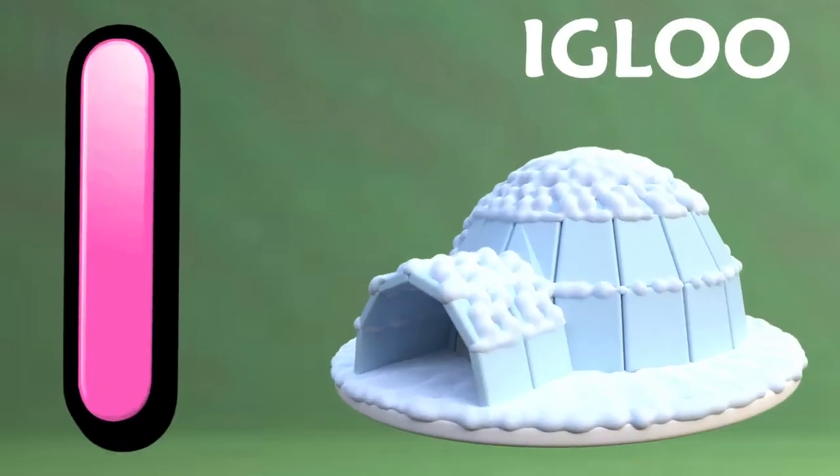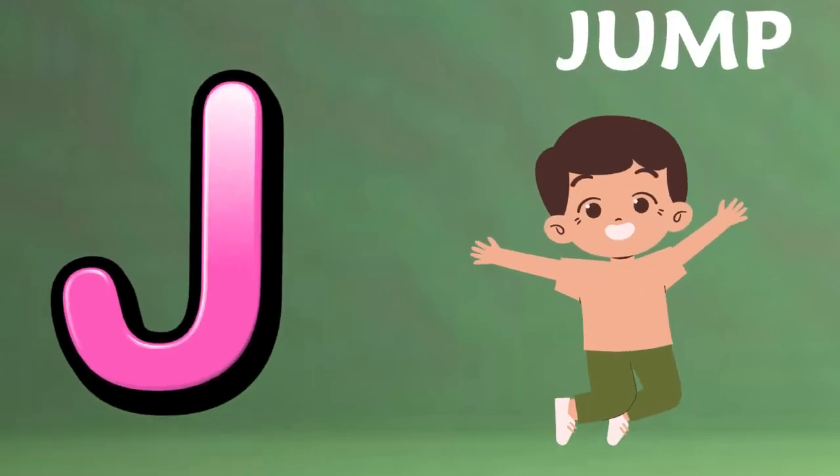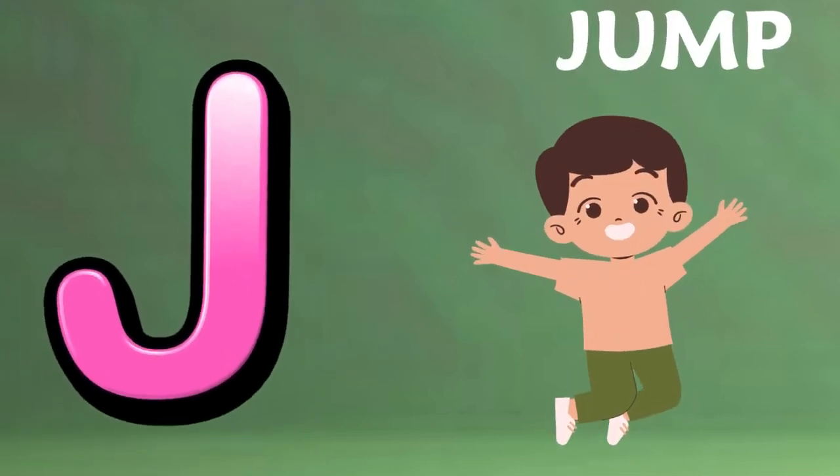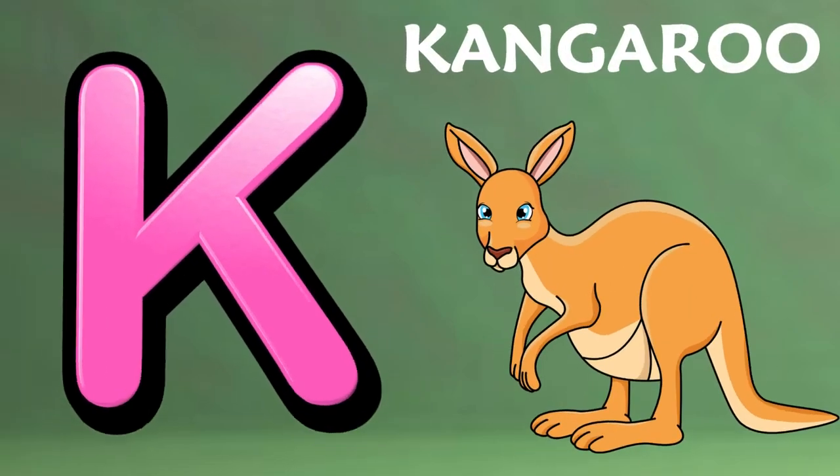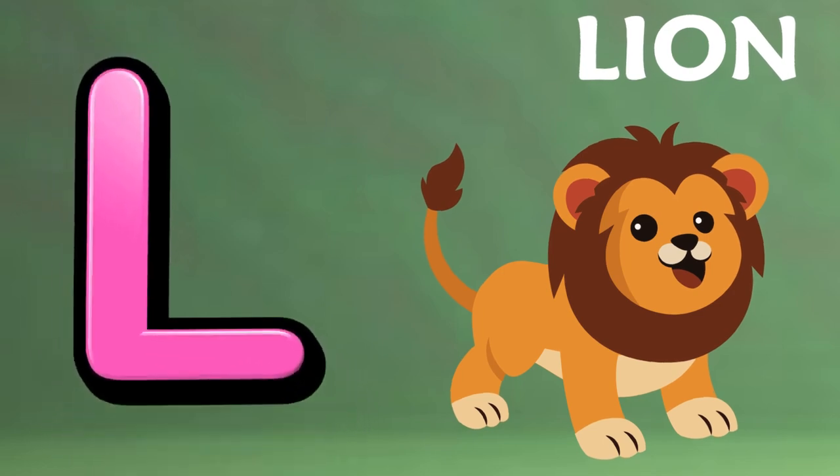I is for igloo, i-i-igloo. J is for jump, j-j-jump. K is for kangaroo, k-k-kangaroo. L is for lion, l-l-lion.